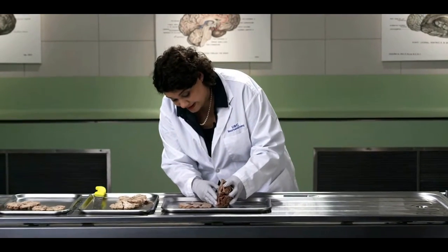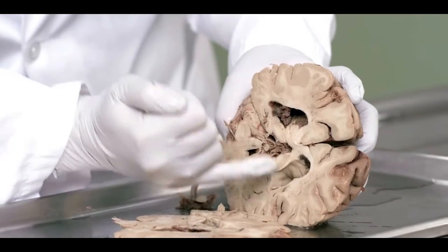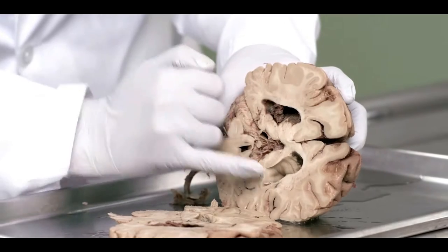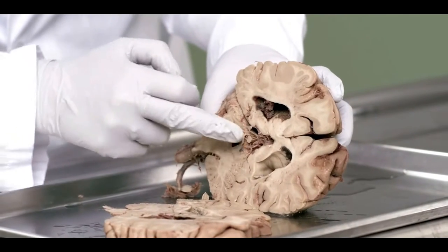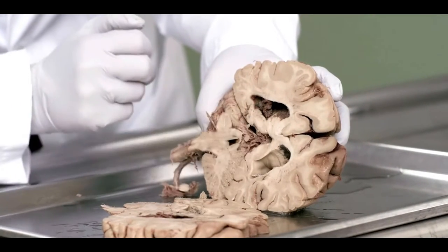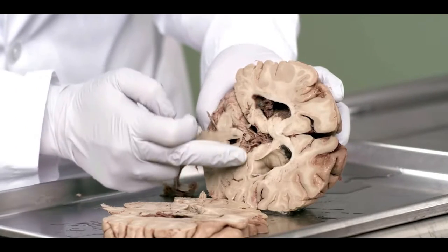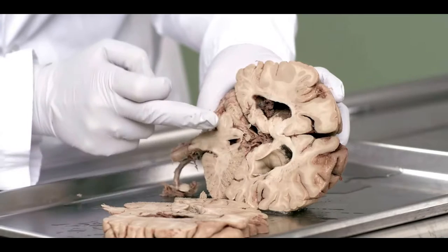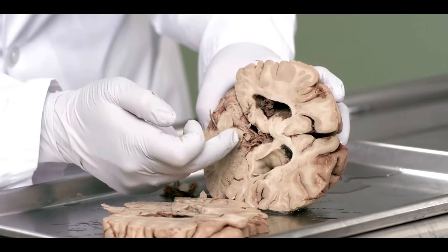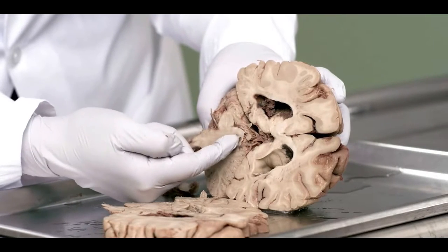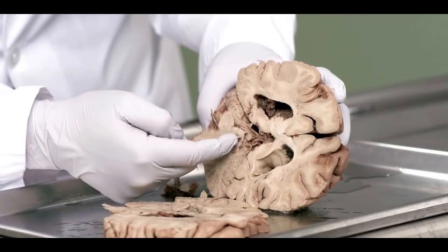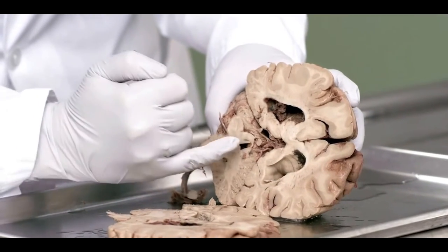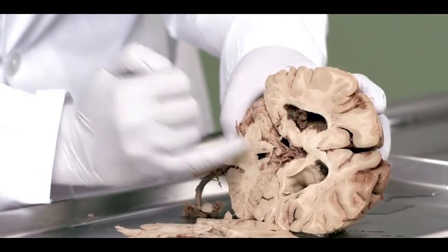In this section you can see that we're getting into the posterior horn of the lateral ventricle. This is the very tail end of corpus callosum. You can see the cut surface of the cerebellum, the middle cerebellar peduncle moving in there. Here you can see the central canal opening up into the fourth ventricle, which will lie just on the other side.